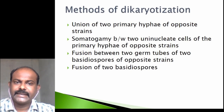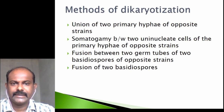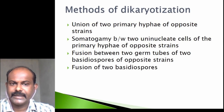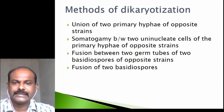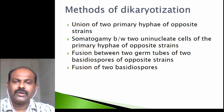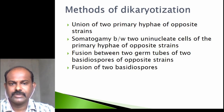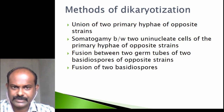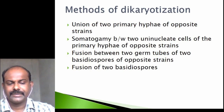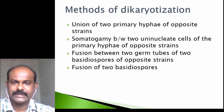The methods of dikaryotization include: union of two primary hyphae of opposite strains, somatogamy between two uninucleate cells of primary hyphae of opposite strains, fusion between two germ tubes of basidiospores of opposite strains, or fusion of two basidiospores. By these methods, dikaryotization can occur in basidiomycetes.